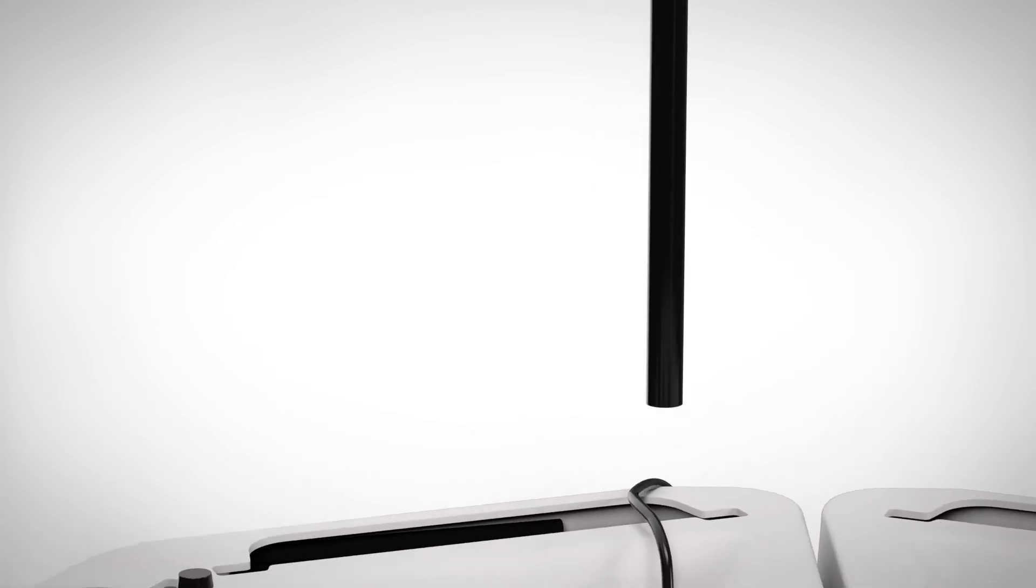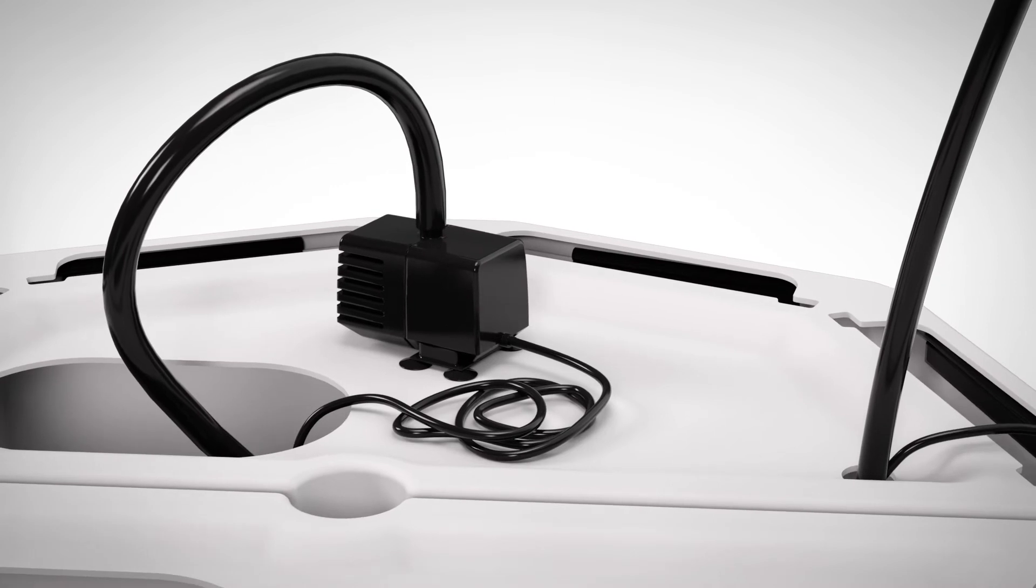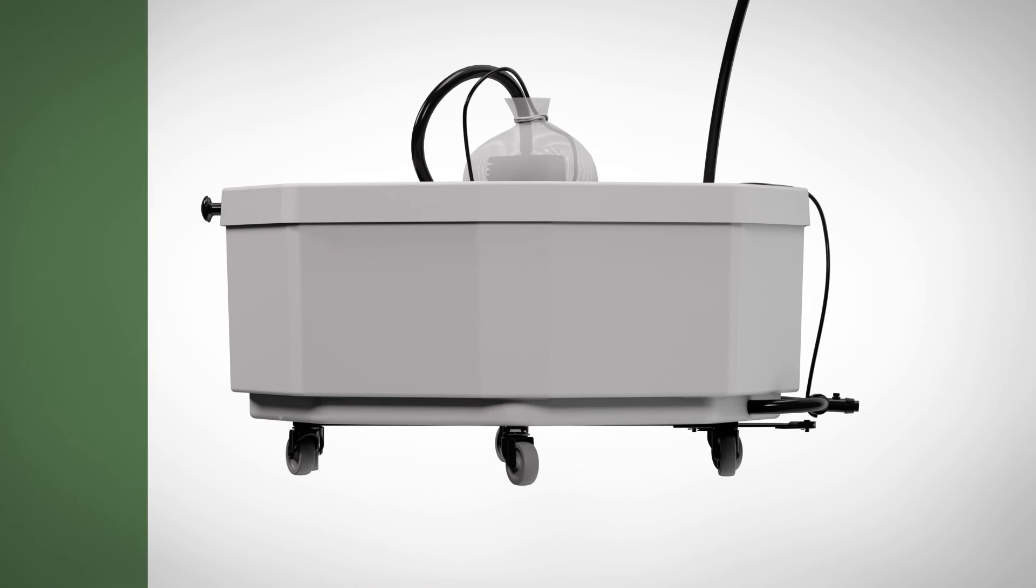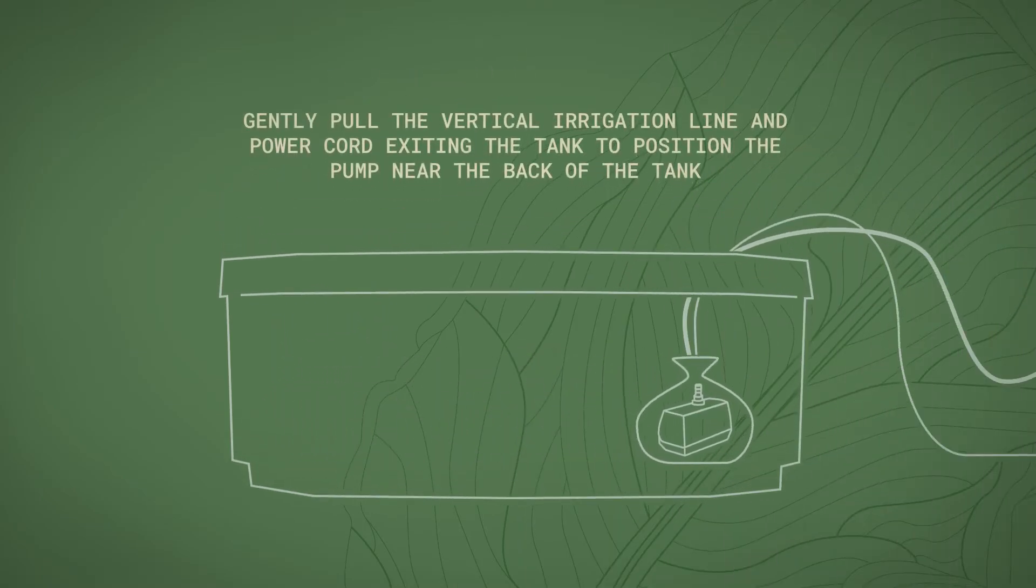Identify the end of the vertical irrigation line without the valve. Insert this end into the tank through the round opening. Pull the vertical irrigation line out of the tank through the large oval opening and connect to the pump's half inch fitting. Place the pump into the pump filter bag allowing the power cord and vertical irrigation line to exit the bag. Tie the pump filter bag closed and place the pump into the bottom of the tank through the oval opening. Gently pull the vertical irrigation line and power cord exiting the tank to position the pump near the back of the tank.